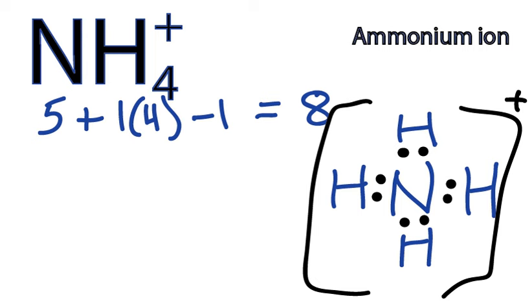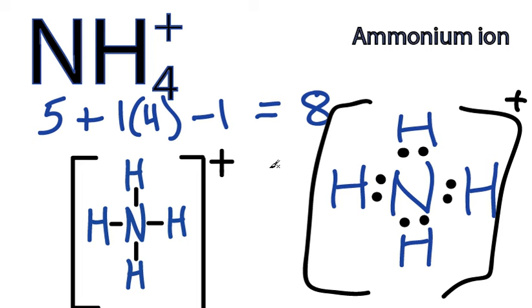So if you drew that real nice as a structural formula, that would look like this right here, where the brackets are just making sure you remember that there is going to be a plus sign, because we lost this electron up here. We have to take account for that.